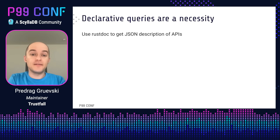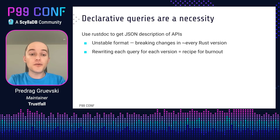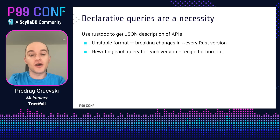At the same time, declarative queries are a necessity. The best data source we have is called RustDoc. It's a tool that comes with Rust that allows us to get machine-readable representations of library APIs. Unfortunately, its format is unstable — it has breaking changes in more or less every Rust release every six weeks. We have to make sure we don't have to rewrite every query for every new version of RustDoc, because that sounds like a recipe for maintainer burnout. It's entirely unsustainable.